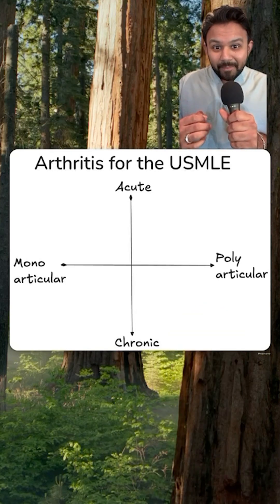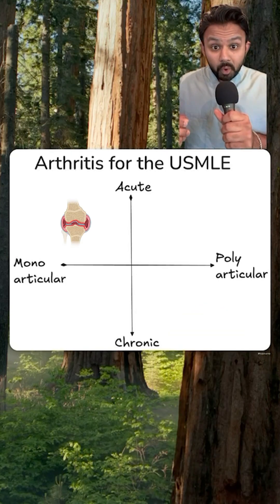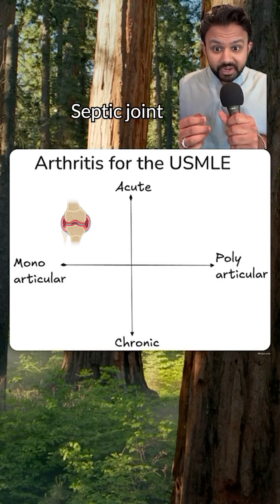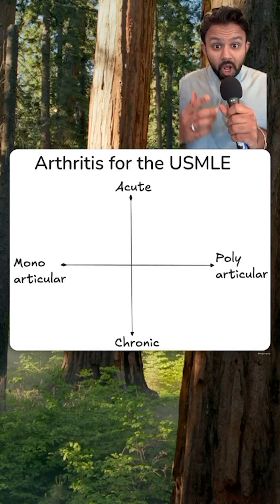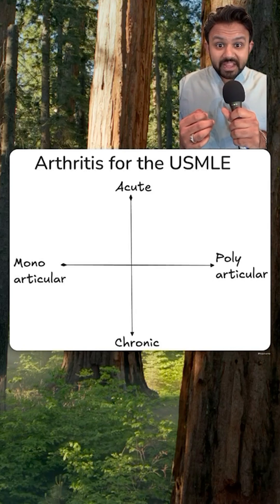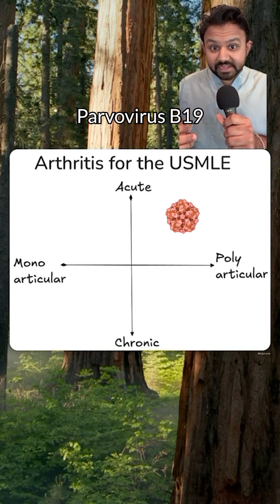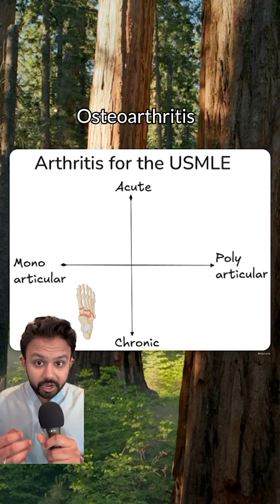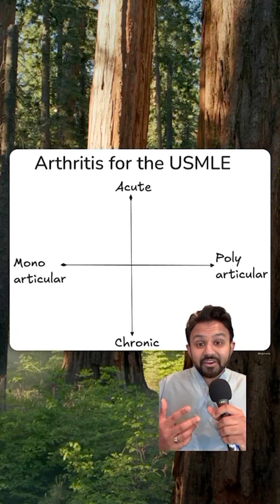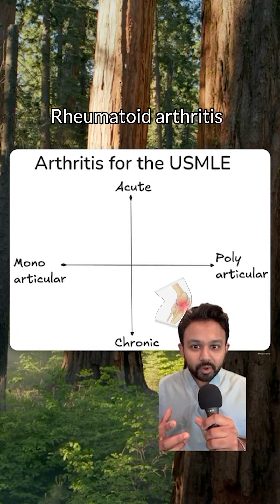Let's do a quick rapid review summary. Acute monoarticular arthritis: think septic joint or gout. Acute polyarticular arthritis: think viral arthritis, parvovirus B19. Chronic monoarticular: think osteoarthritis. Chronic polyarticular: think rheumatoid arthritis. Watch for systemic symptoms such as fever and weight loss.